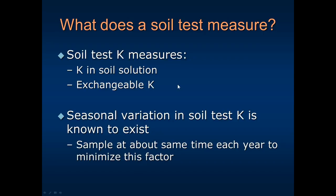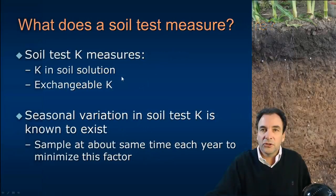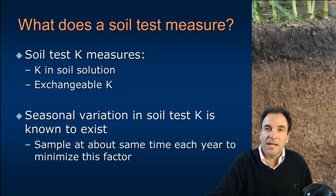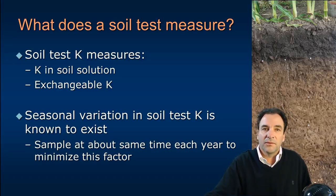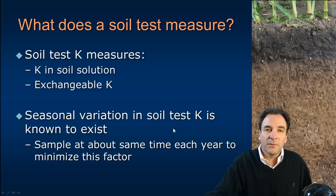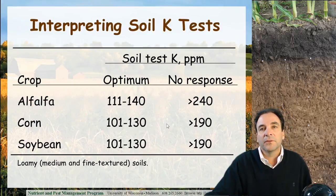The soil test: when we collect a soil sample and send it to the lab, the lab is measuring two parameters regarding soil test potassium. They measure potassium in the soil solution — the dissolved, readily available fraction — and they estimate the exchangeable potassium, how much of that potassium held on clay particles and organic matter particles is available to come into solution for plants. When sampling for potassium as part of routine soil testing, it's important to sample at the same time from year to year because there can be seasonal variation in soil test potassium levels.